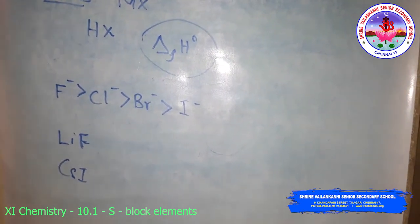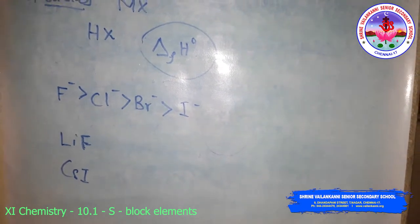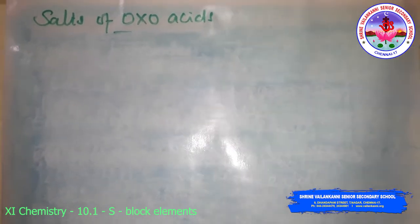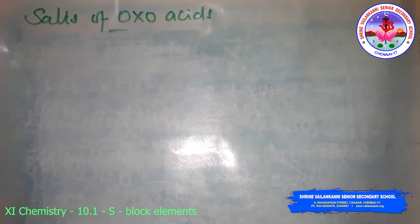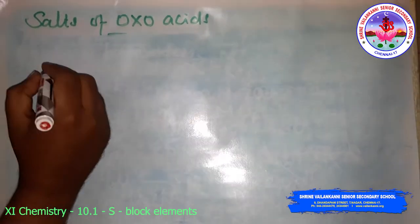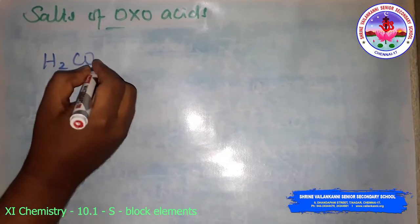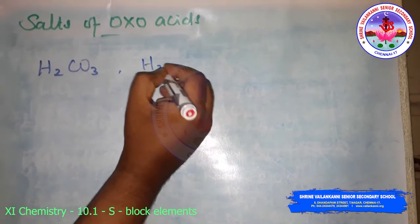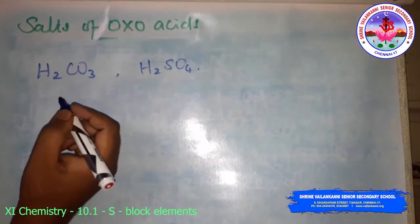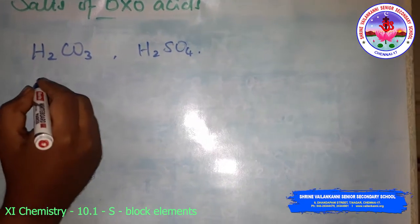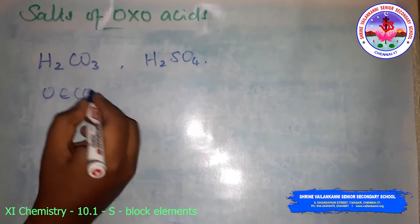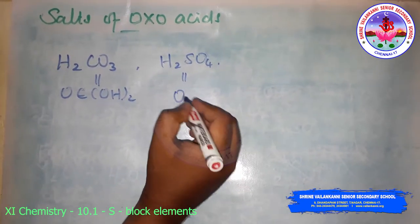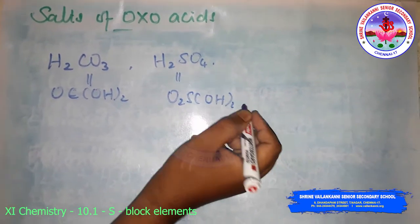Next is the salts of oxoacids. Oxoacids are those in which the acidic proton is on a hydroxyl group with an oxo group attached to the same atom. Examples include carbonic acid H2CO3, which can be written as CO(OH)2, and sulfuric acid H2SO4, written as O2S(OH)2.